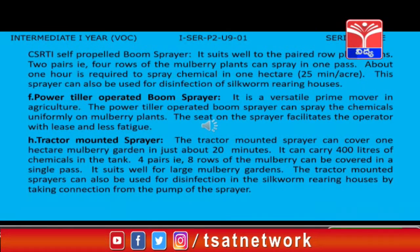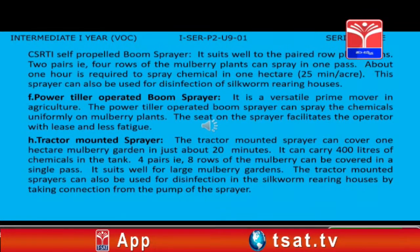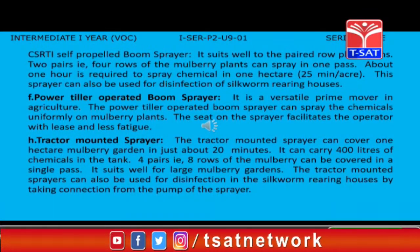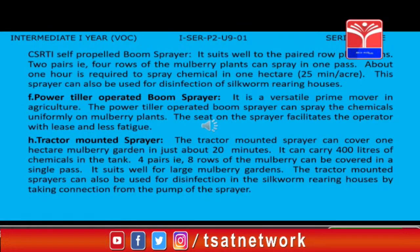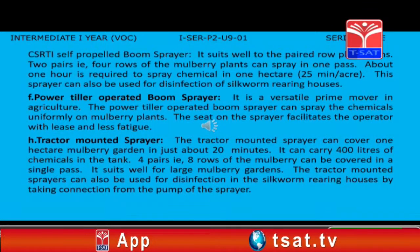CSR-TI Self-Propelled Boom Sprayer: A self-propelled boom sprayer developed by CSRTI Mysore suits well for paired row plantations. Two pairs, i.e. four rows of mulberry plants, can be sprayed in one pass. About one hour is required to spray chemicals in one hectare. The sprayer can also be used for disinfection of silkworm rearing houses.